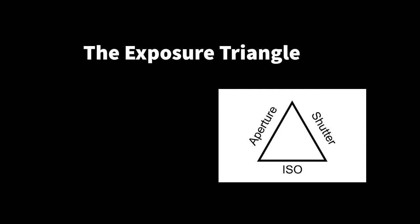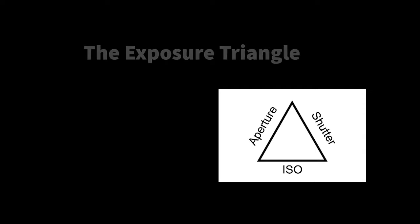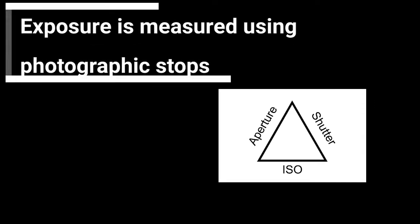A helpful paradigm in photography when thinking about exposure is the exposure triangle. It says that exposure has three components and all three need to be functioning for you to get an image. Those components are aperture, shutter, and ISO.